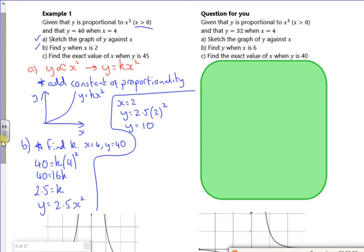Let's have a look at C. Find the exact value of x when y is 45. So y is 45. I've got 45 is 5 over 2. Because it says exact, I'm going to switch 2.5 to 5 over 2. So x squared. If I times by 2, it's 90. If I divide by 5, it's going to be 18.